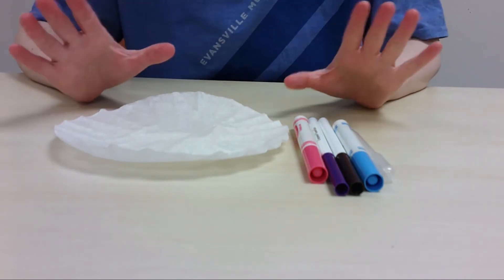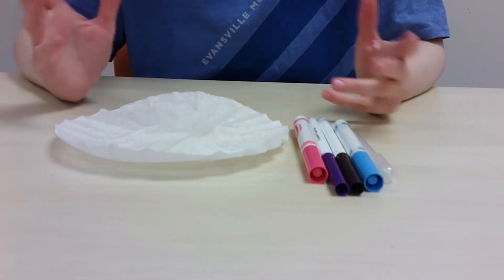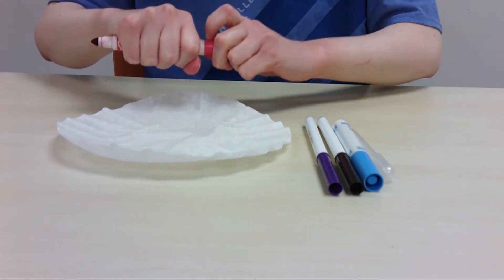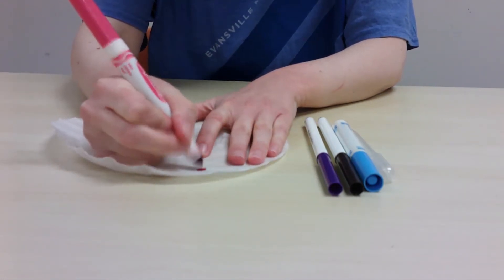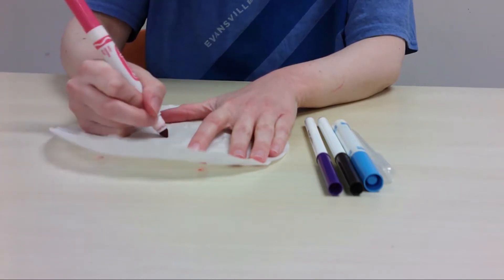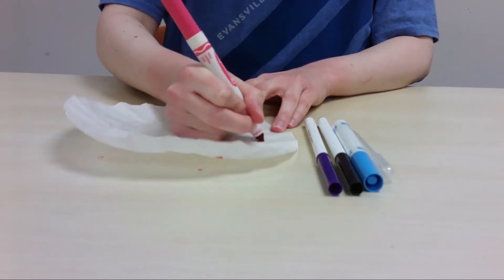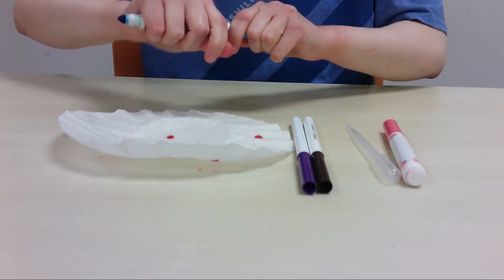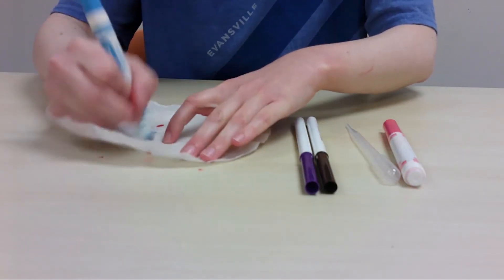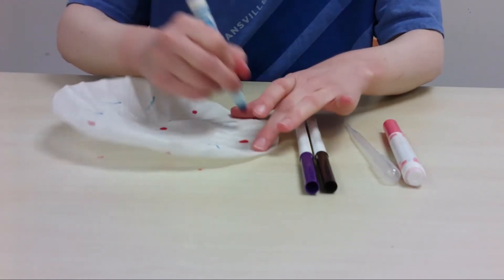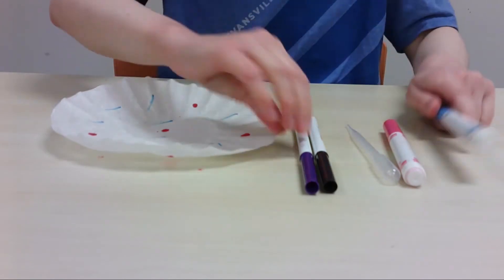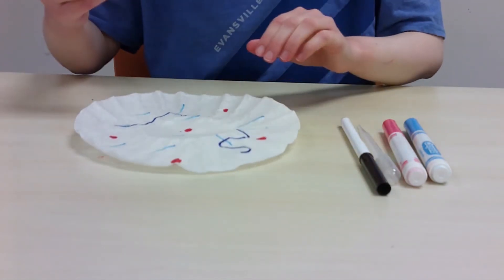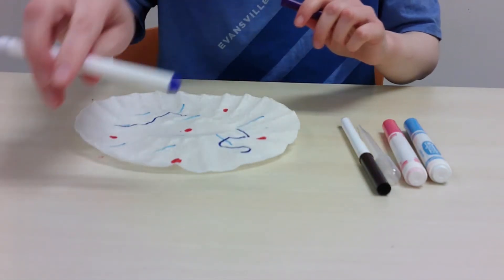You're going to decorate your coffee filter with whatever designs you'd like to do. I'm going to go abstract with lines and squiggles and dots, but you could draw something Halloween themed, like a pumpkin. So we're going to start out with some pink polka dots. And I'm going to make some blue lines.